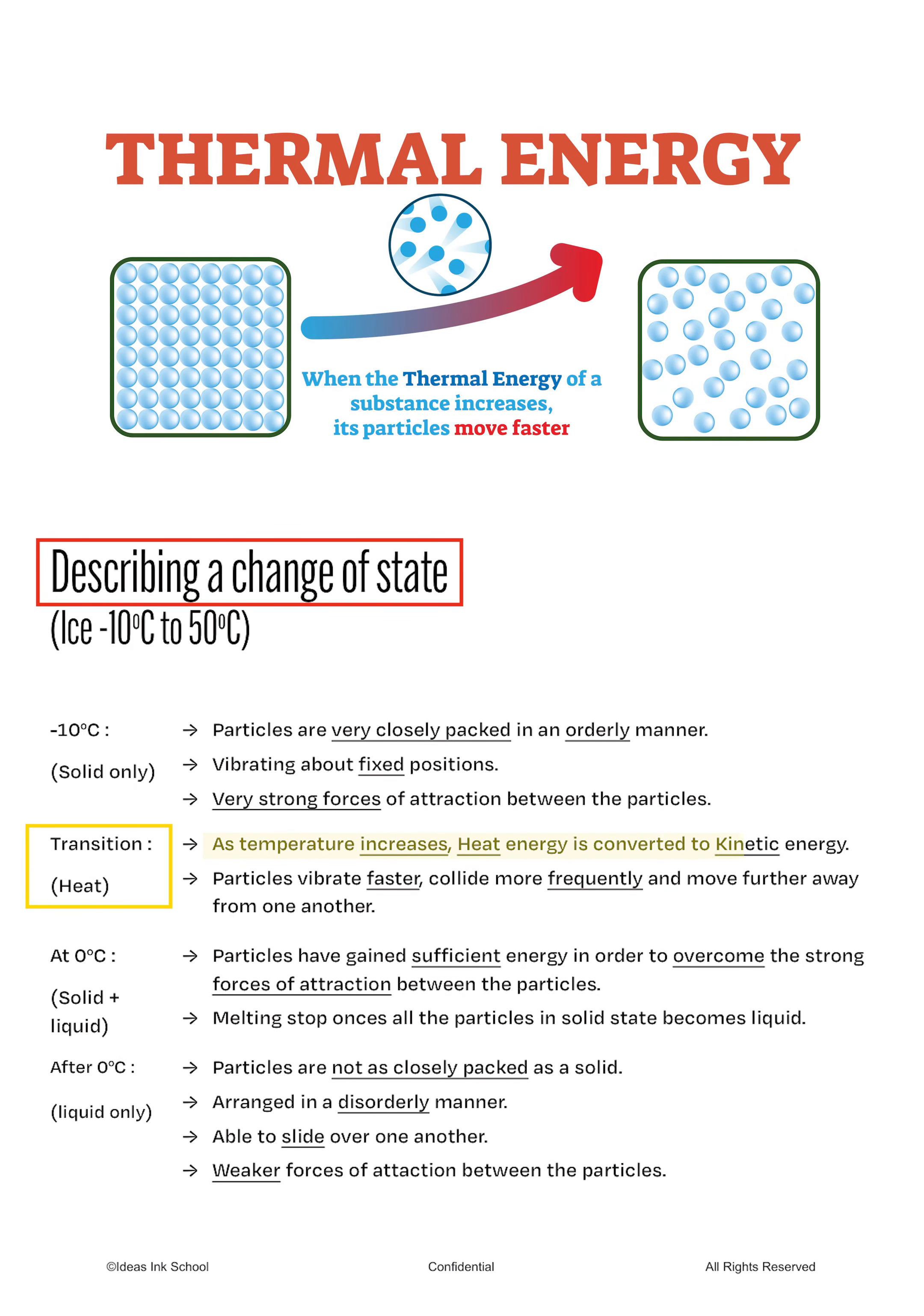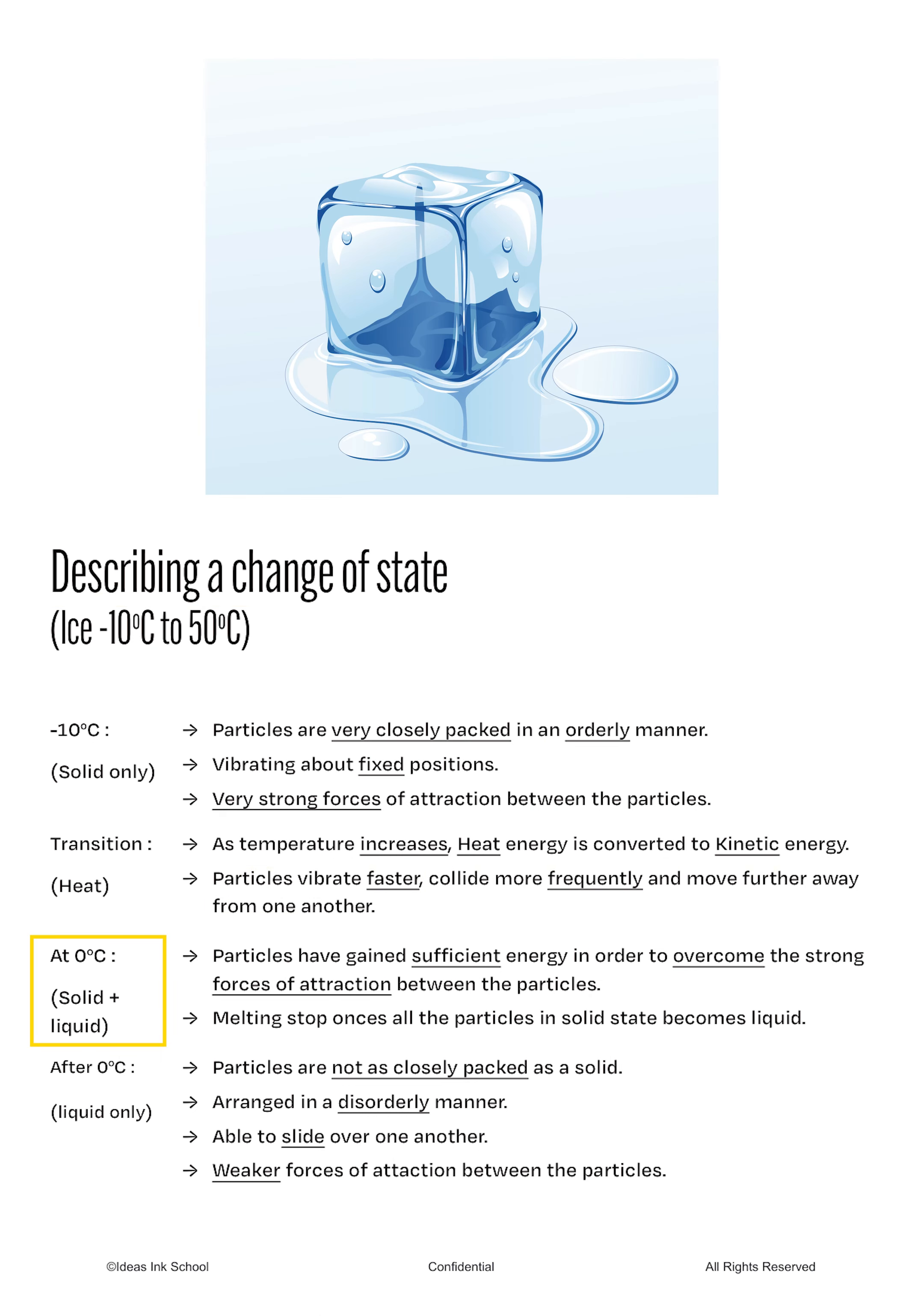As temperature increases, heat energy is converted to kinetic energy. The particles then start to vibrate more vigorously. They collide with other particles more frequently and move further away from each other. This trend continues till the temperature reaches 0°C, which is the melting point of pure water. At 0°, the particles have gained sufficient energy to overcome the strong forces of attraction between the particles and break free from their fixed positions.